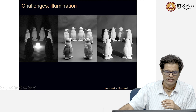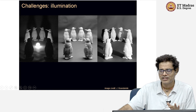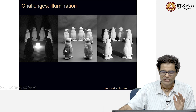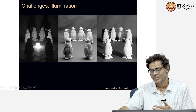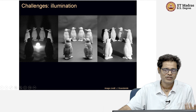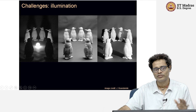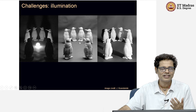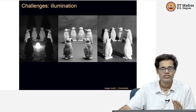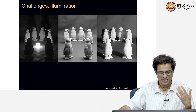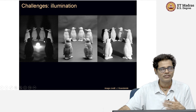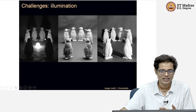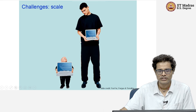Another very interesting challenge is illumination. The same scene captured with the same camera but with different lighting looks very different — for example, when the light is at the center, at the top, or on the right, the shadows change dramatically. If we train our model on one illumination condition and test on a very different one, the algorithm will struggle. Illumination variation is definitely a challenge. Scale could also be a challenge — if you train at only one scale and don't account for multi-scale variations, you will be in trouble.